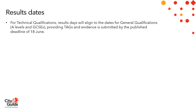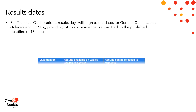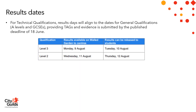For technical qualifications, results days will align to the dates for general qualifications, A-levels and GCSEs, providing TAGS and evidence is submitted by the published deadline of 18 June. Level 3 results will be made available to centres on Walled Garden on Wednesday 11 August and can be released to students on Thursday 12 August.